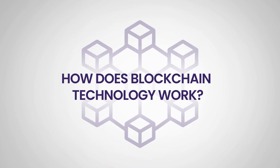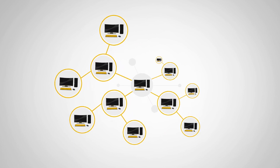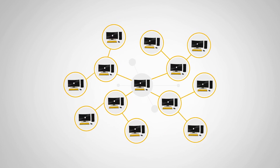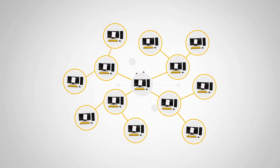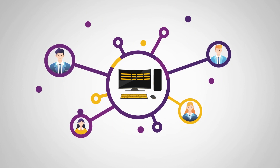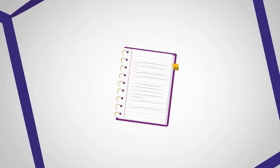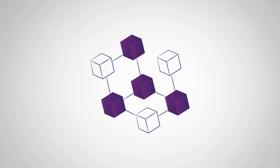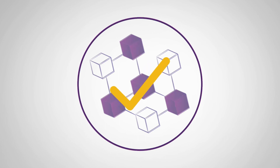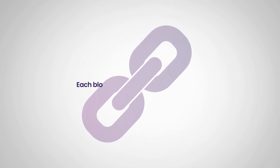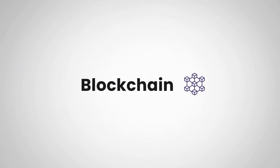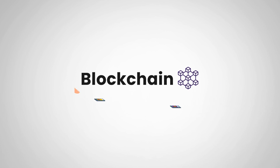So how does blockchain technology work? It works by creating a decentralized distributed ledger that records transactions in a secure and transparent manner. The ledger is made up of blocks which contain a set of verified transactions, and each block is linked to the previous block, creating a chain of blocks that makes up the blockchain.